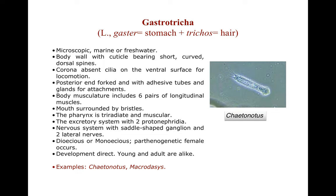Now phylum Gastrotricha. Gastrum means stomach and trichus means hair. They are microscopic, marine or freshwater animals. The body wall has cuticle with short curved spines. Cilia are absent on dorsal surface but present on the ventral surface and are used for locomotion. The posterior end is forked with adhesive tubes and glands used for attachment. Body musculature includes six layers of longitudinal muscles. The mouth is surrounded by bristles. The pharynx is triradiate and muscular.